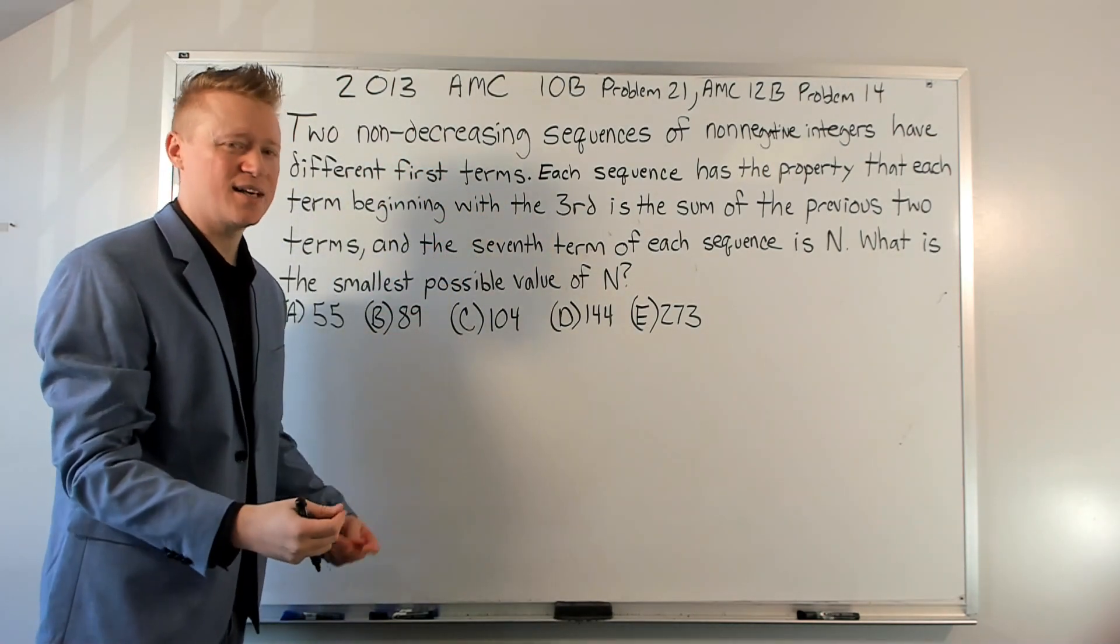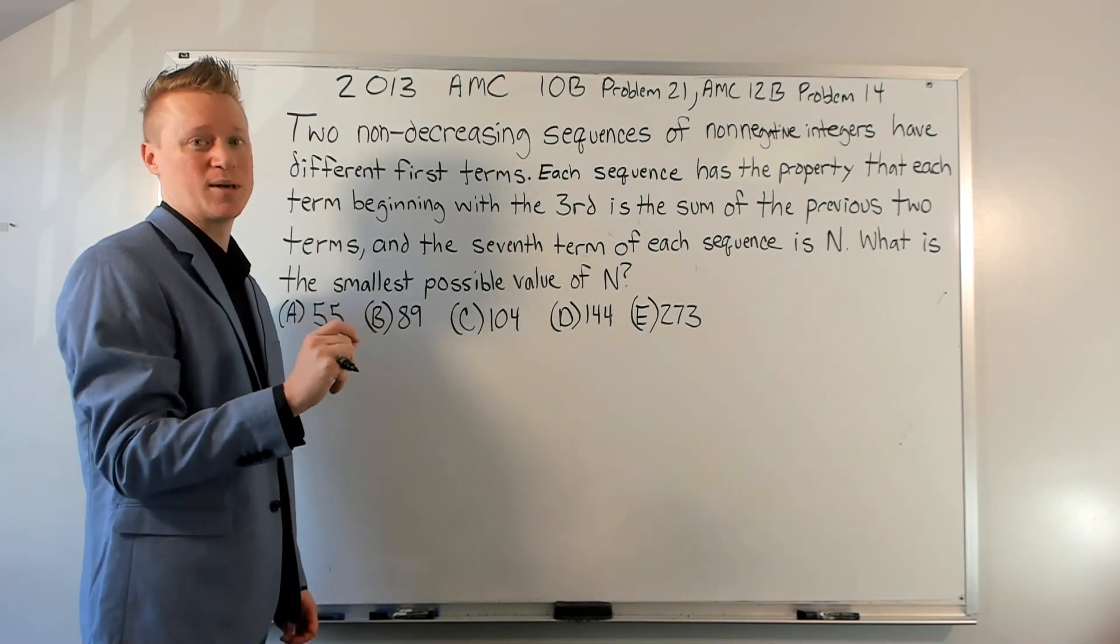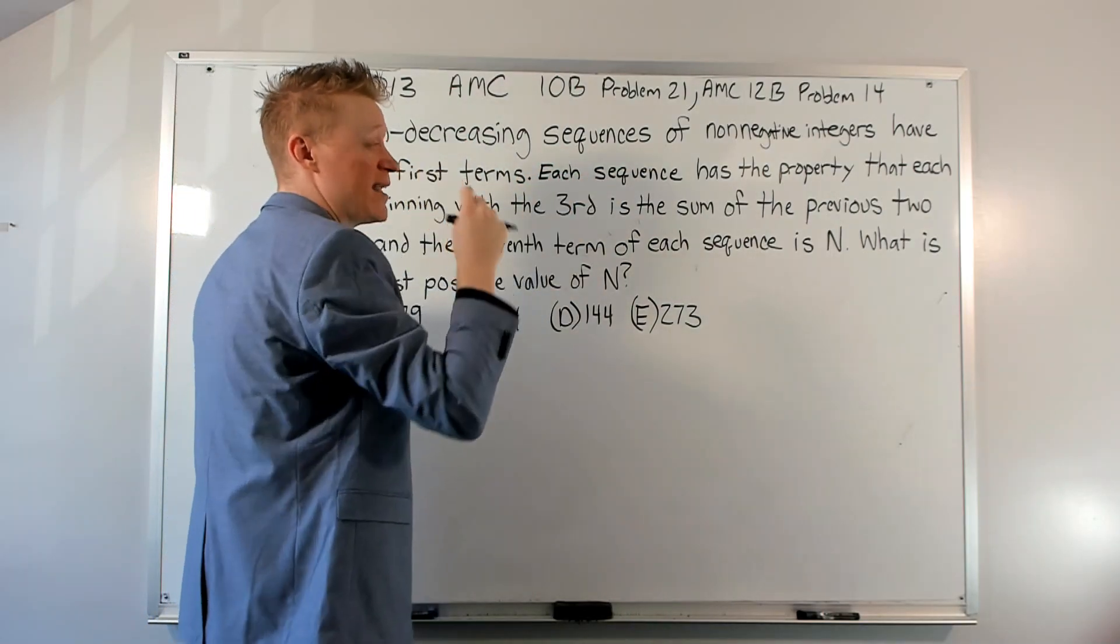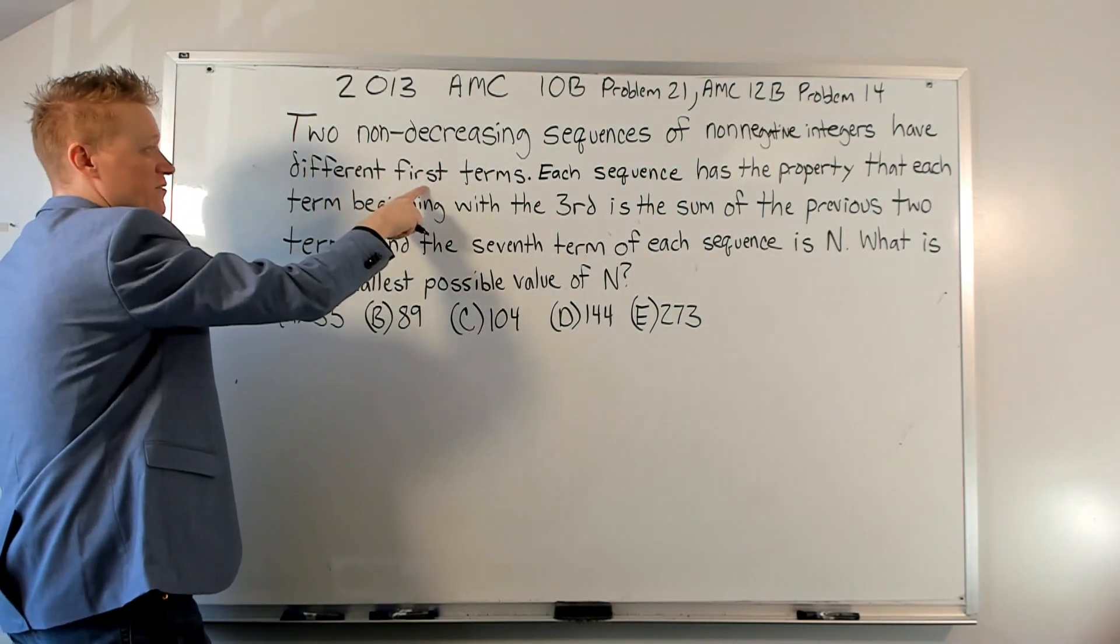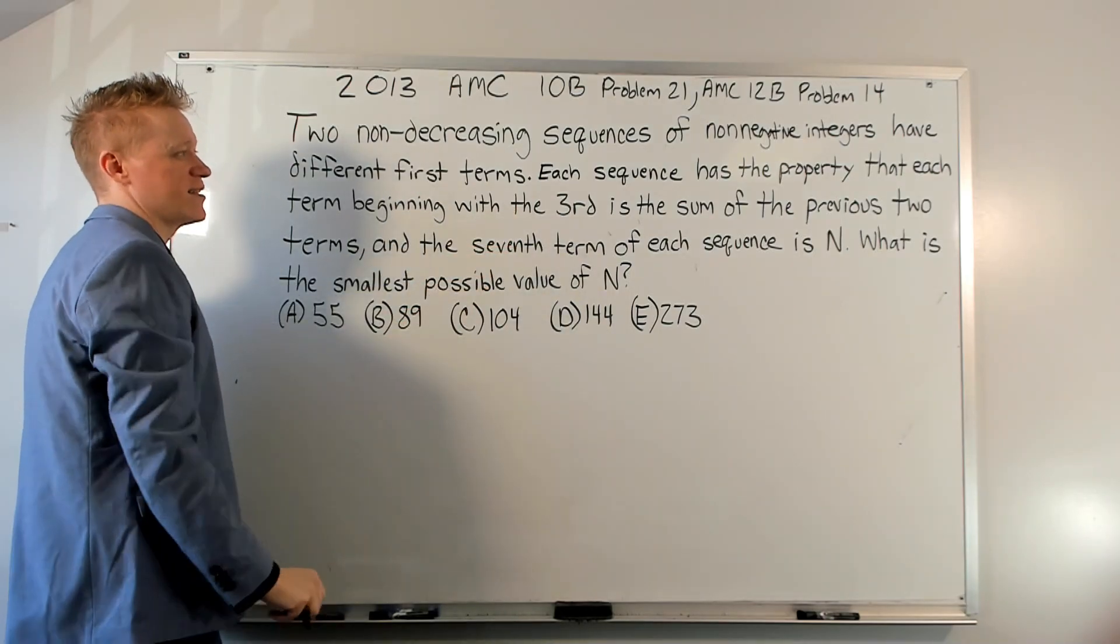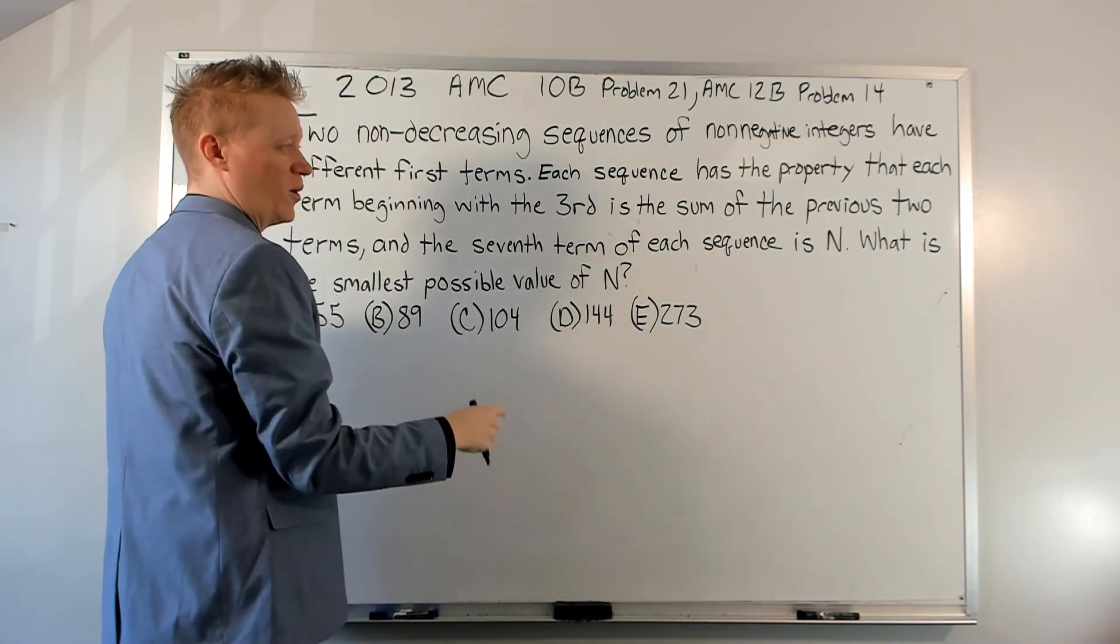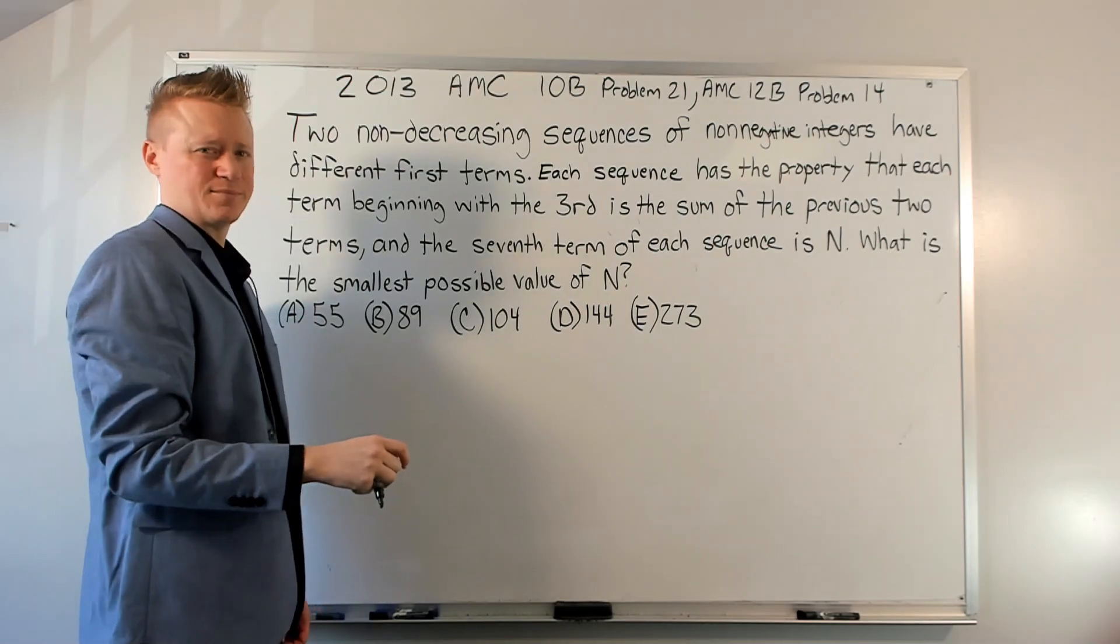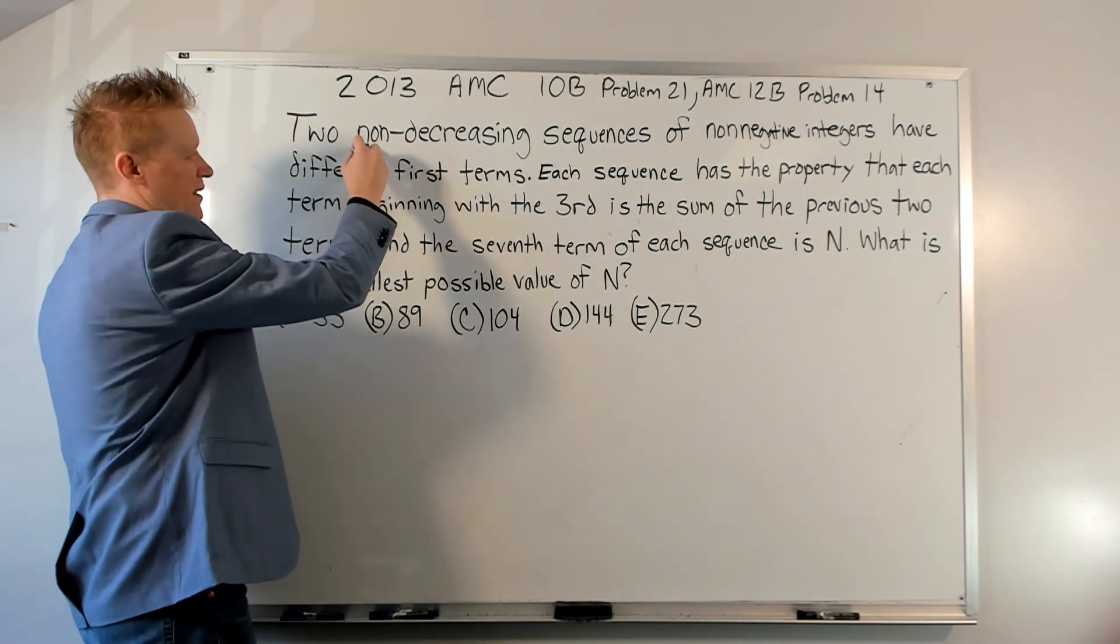If it meant increasing, it would say increasing. Don't read into things that it doesn't say. That's the number one reason a lot of people make mistakes on these tests. So non-decreasing sequences of non-negative integers. It doesn't say positive. Zero is in play. Non-negative integers have different first terms. Each sequence has the property that each term beginning with the third is the sum of the previous two terms, like Fibonacci basically. And the seventh term of each sequence is N. So they have the same seventh term. What is the smallest possible value of N? Okay, well, how do you progress?